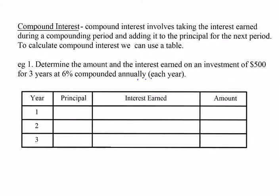Compound interest involves something new, but it's actually something we may have seen in the past. So let's start. Determine the amount of interest earned on $500 for three years at six percent compounded annually each year.